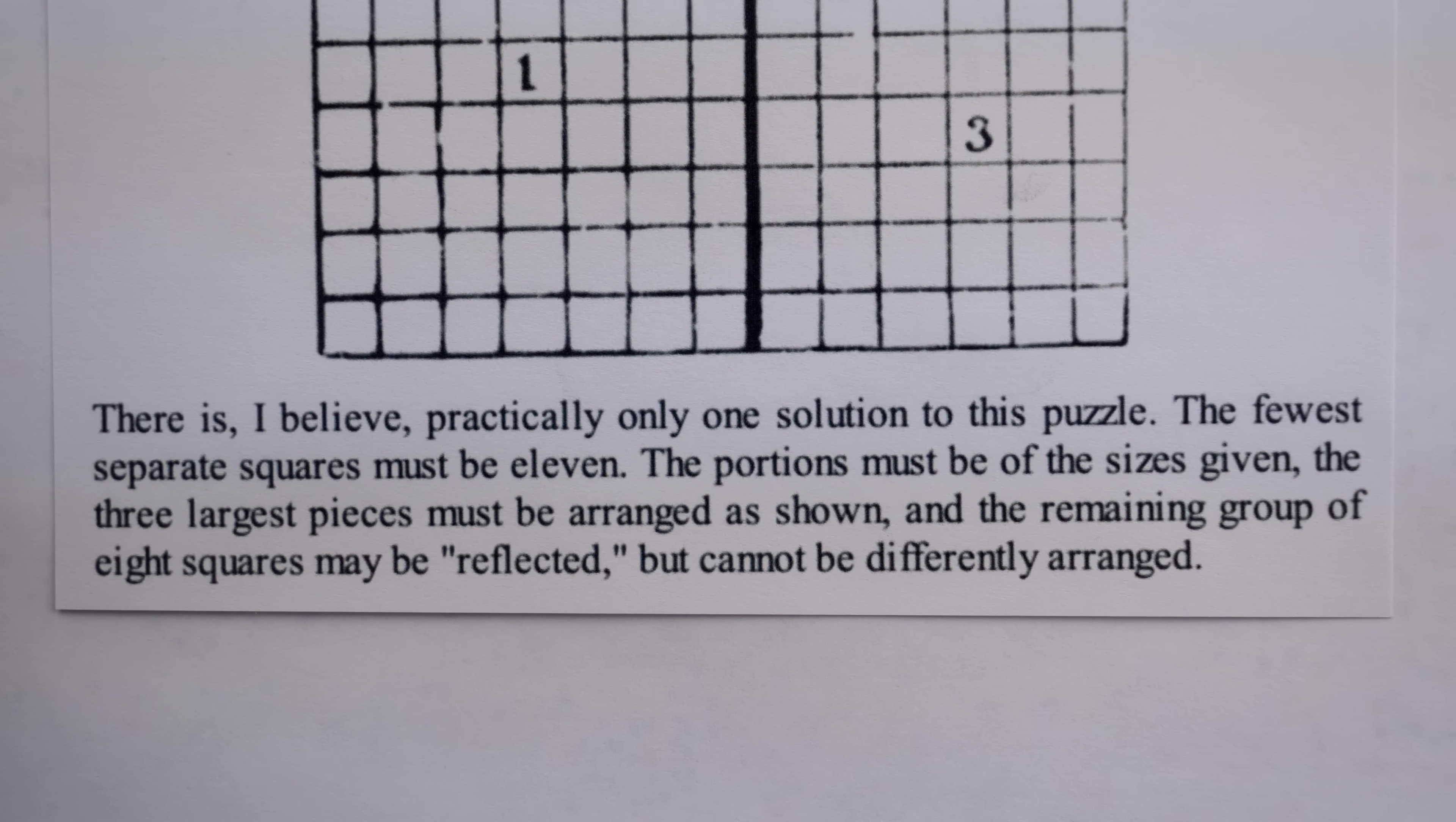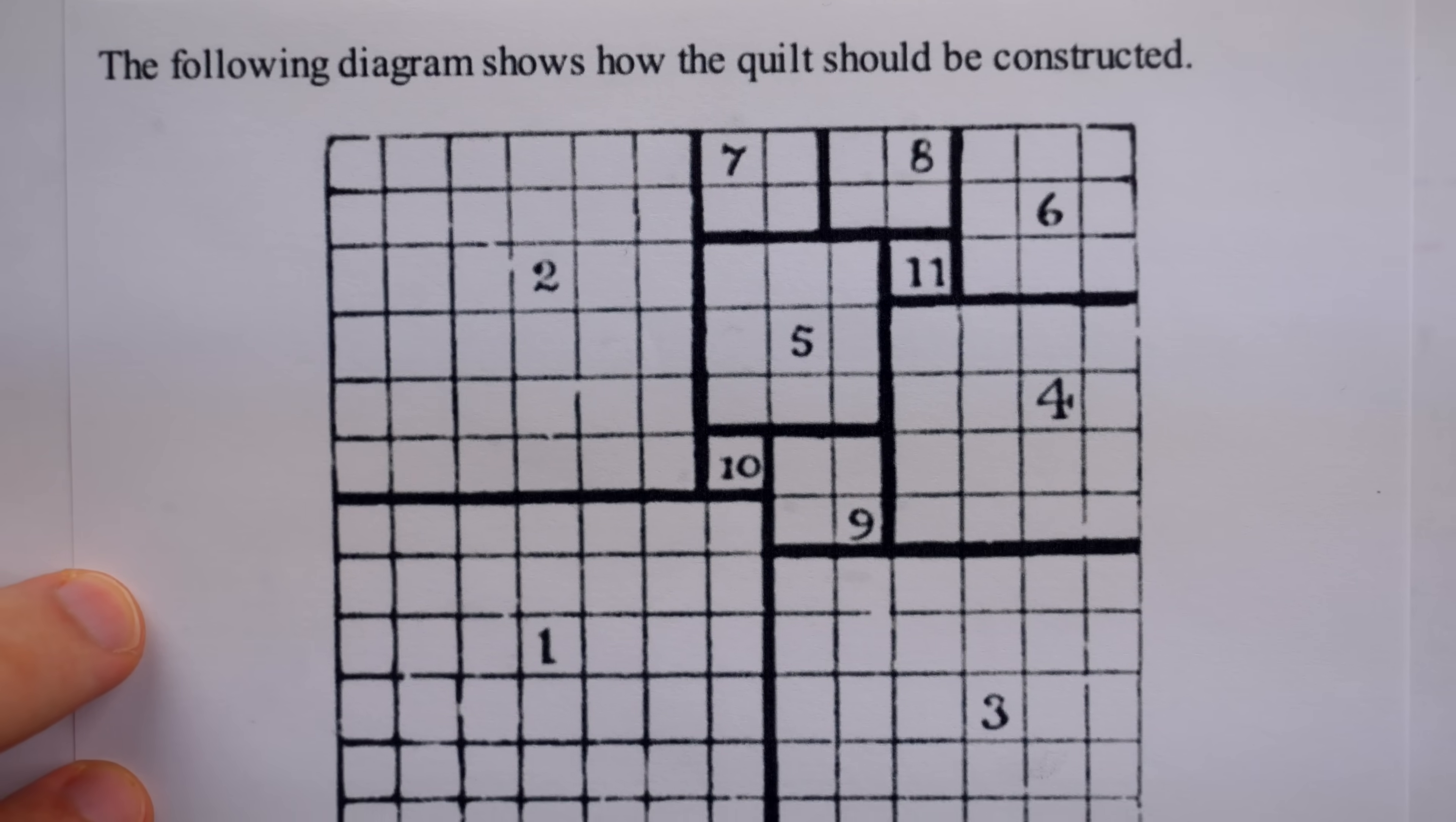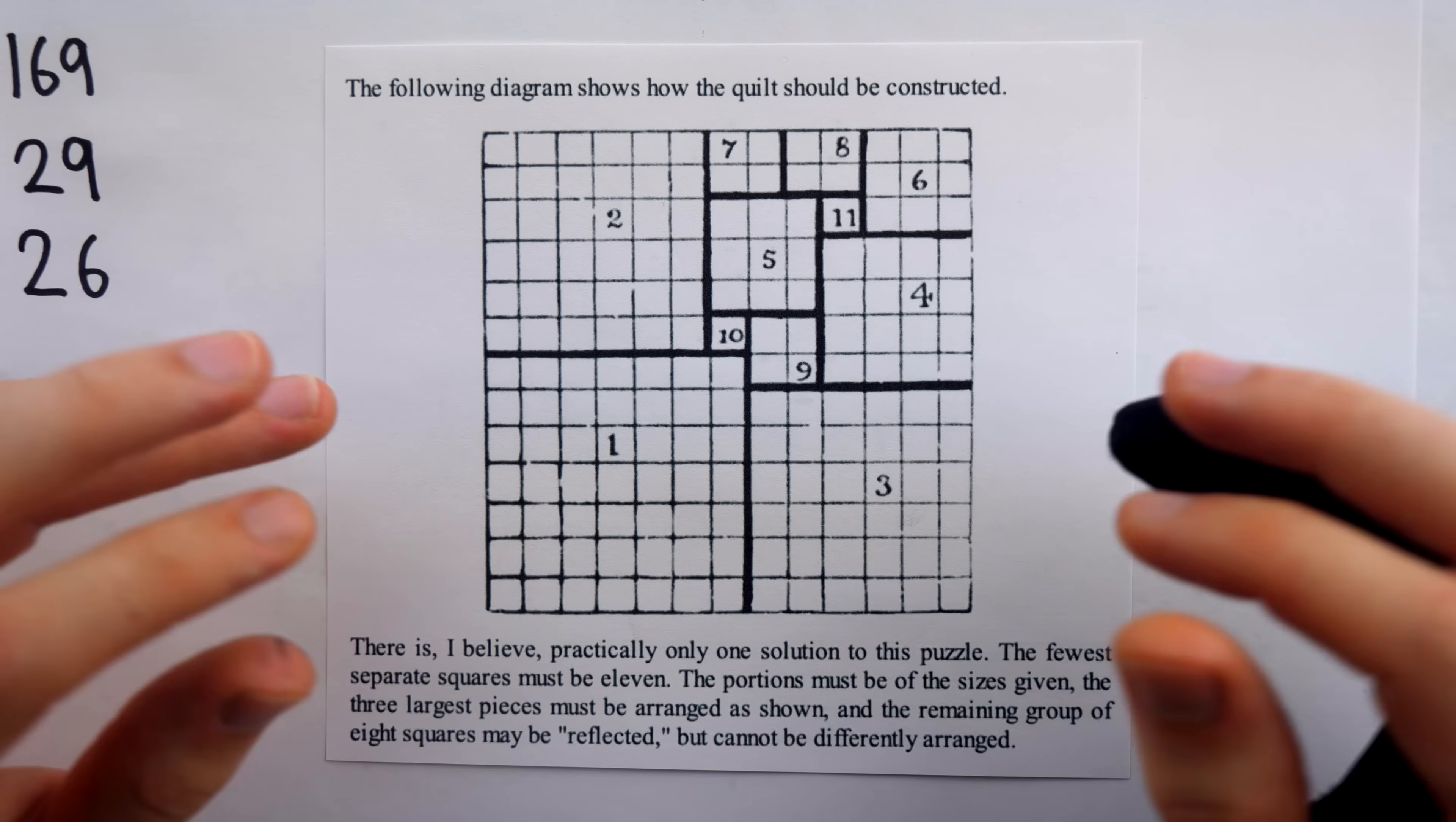But when Henry Dudeney published this solution in 1917, still well before the power of computers was at hand, he said, there is, I believe, practically only one solution to this puzzle. The fewest separate squares must be 11. The portions must be of the sizes given, the three largest pieces must be arranged as shown, and the remaining group of 8 squares may be reflected, but cannot be differently arranged. And it turns out, once we did have the power of computers, it was confirmed that Dudeney was correct. This is the only solution. There's no meaningfully different way to cut a 13x13 quilt into 11 square pieces, or fewer pieces.